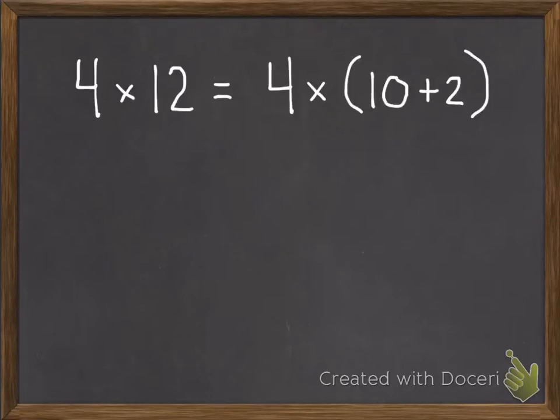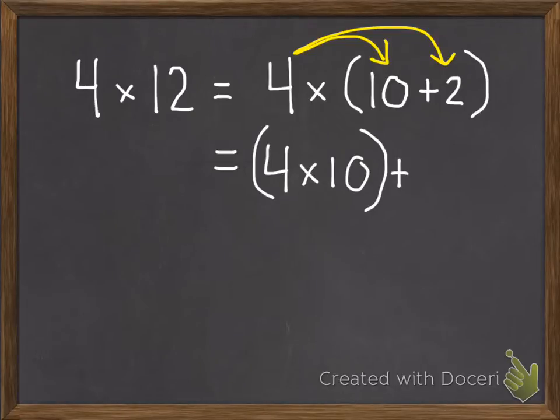So we broke that 12 apart into 10 and 2. So 4 times 12 equals the same thing as 4 times, in parentheses, 10 plus 2. So that 10 plus 2 equals 12. Once we broke this apart, we took our 4 and multiplied it by the 10 and by the 2. Or we could rewrite that as 4 times 10 plus 4 times 2. Once again, this equals 4 times 12. We've just broken it apart.